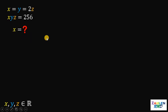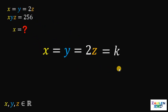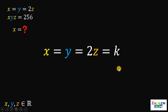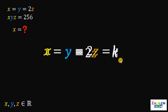Seeing this question like x equals y equals 2z, what we're going to do here is to equate x, y, and 2z into another variable — let's call this k. Now, why do we do that? Because if we do that, we now have three equations: x equals k, y equals k, and 2z equals k.